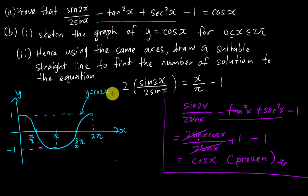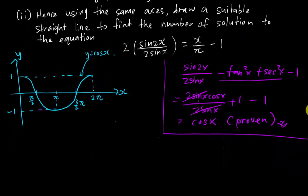Okay, then for the second part, some students might think this one is quite confusing. For the second part, using the same axis, draw a suitable straight line to find the number of solutions. Number of solutions means how many intersection points between the straight line and the curve. And then you have this equation. So basically I will need to solve this equation.